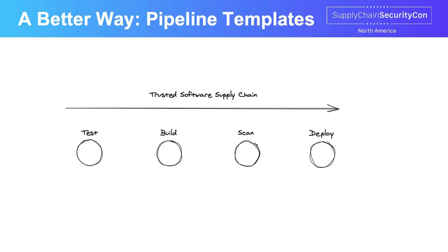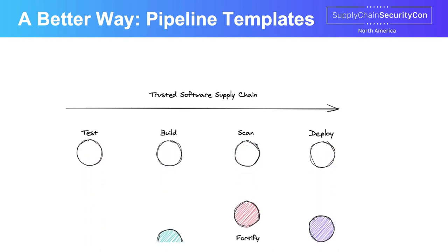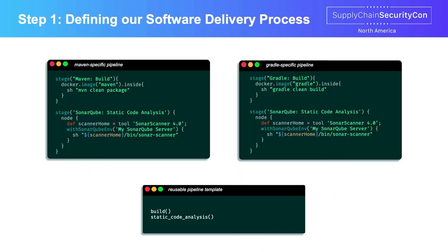This GIF steps through how we can apply the same template to different combinations of tools without creating a new pipeline from scratch. Step one: defining our software delivery process. In the upper left and upper right, I have two contrived pipelines to demonstrate the concept. On the left, an application using Maven as their build tool; on the right, an application using Gradle. The left does a build with Maven running 'mvn clean package', then static code analysis with SonarCube. The right does a build with Gradle and also static code analysis.